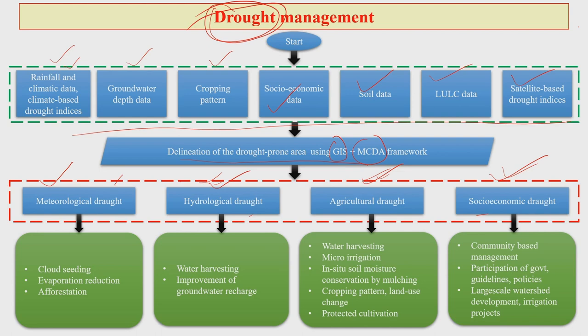Meteorological drought is the drought which largely depends on meteorological parameters. The management practices you can try for meteorological drought include cloud seeding, evaporation reduction, and afforestation — the easiest, but very efficient option.